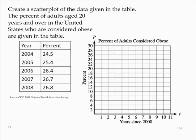Since 2004 was four years since 2000, we would have t equals 4, and then 24.5 would be about here. 2005 would be t equals 5, and 25.4, so about here.